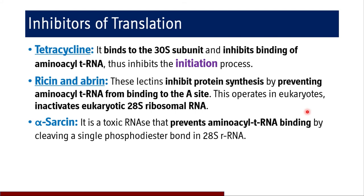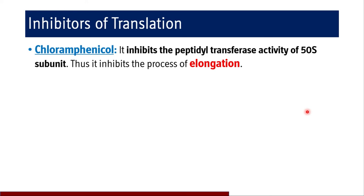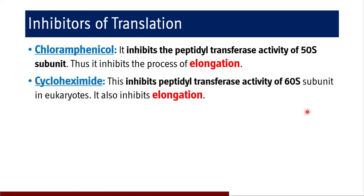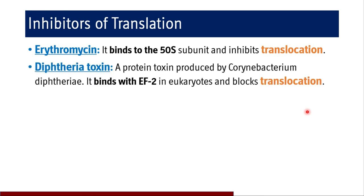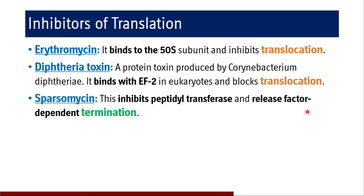Alpha-sarcin is a toxic RNA that prevents aminoacyl tRNA binding by cleaving a single phosphodiester bond in 28S rRNA. Chloramphenicol inhibits the peptidyl transferase activity of the 50S subunit, inhibiting elongation. Cycloheximide inhibits the peptidyl transferase activity of the 60S subunit in eukaryotes, also inhibiting elongation. Erythromycin binds to the 50S subunit and inhibits the translocation process. Diphtheria toxin, produced by Corynebacterium diphtheriae, binds to EEF2 in eukaryotes and blocks translocation. Paromomycin inhibits peptidyl transferase and release factor dependent termination. So we have seen inhibitors of initiation, elongation, and termination.